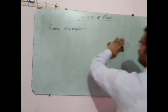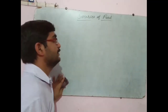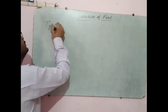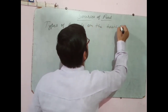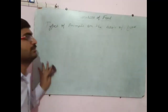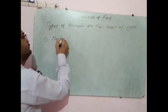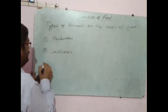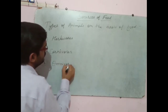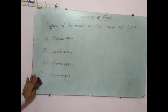On the basis of food, there are many varieties of animals. Every type of animal does not eat the same kind of food. The animals which eat different types of food can be classified as follows: first is herbivores, second is carnivores, third is omnivores, and fourth is scavengers.